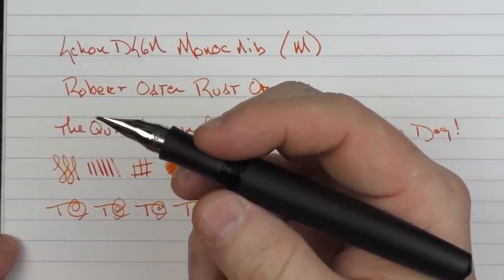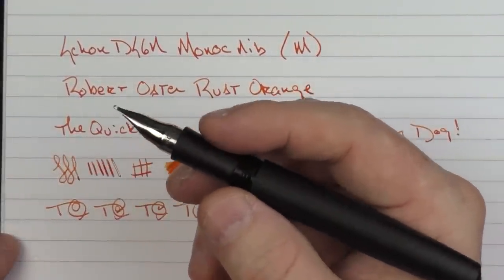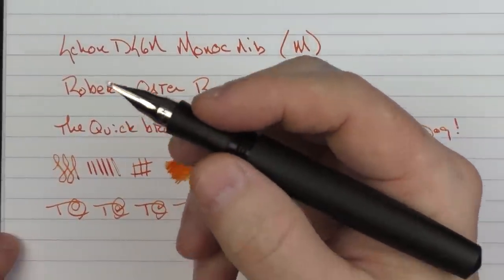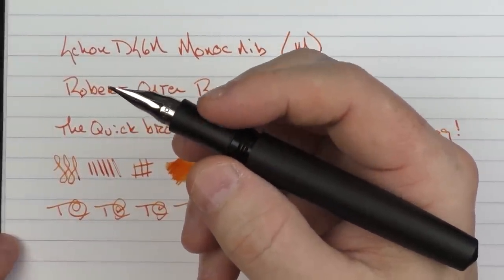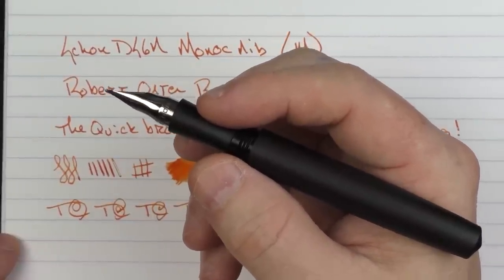I wouldn't describe this experience as extremely smooth. There is a hint of feedback to it. But it's pleasant and different. It's one of those nibs that you kind of are going to get a feeling for and will be distinctive in your mind. To where when you're writing with it, you'll know that you're using a Monarch nib.